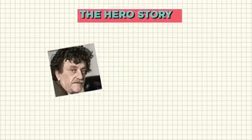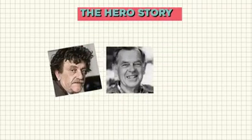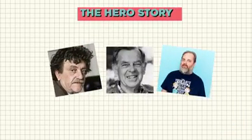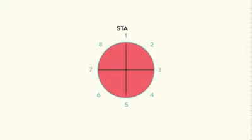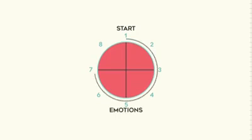I use the hero story — that's an old trick, a scientific study mostly done by Joseph Campbell and others. They use the circle of eight, where the story starts and the audience goes through the emotions of your story, and their emotions return back to the start.